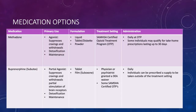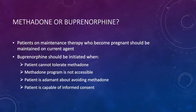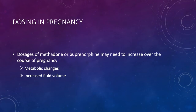Which do you use — methadone or buprenorphine? Anyone who gets pregnant on maintenance should stay on that maintenance. If they are already on methadone, keep them on methadone. If they are already on suboxone, keep them on buprenorphine with the modification that they should be switched from suboxone to subutex. Buprenorphine should only be initiated if the patient cannot tolerate methadone, the methadone program is not accessible, the patient is absolutely adamant about avoiding methadone, and the patient is capable of informed consent. Dosing may require changes as pregnancy progresses due to metabolic changes, increased fluid volume, and weight changes.